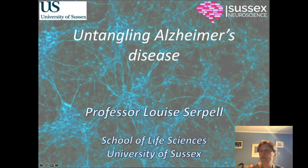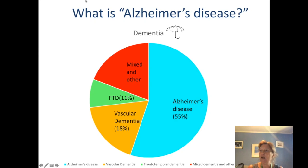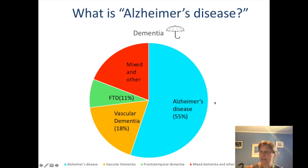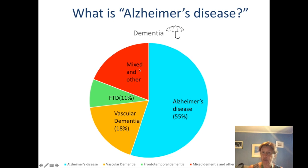I work at the University of Sussex within Sussex Neuroscience. So, what exactly is Alzheimer's disease? You may have heard the term dementia and wondered what the difference is. Dementia is really an umbrella term encompassing all sorts of dementia. As you can see from this graph, Alzheimer's disease is the most common form, followed by vascular dementia, frontal temporal dementia, and a number of others. Alzheimer's disease is the most common form of dementia affecting the population, so we focus mostly on it.